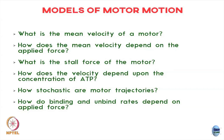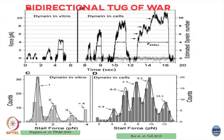For example, this stall force I was talking about: these are cargo trajectories of cargoes carried by dyneins either inside a test tube or inside cells. You can look at these trajectories and construct histograms of the stall force — the force required to stall the motion of the cargo completely. These stall forces have peaks at around 1 piconewton, 2 piconewtons, 3 piconewtons inside the cell.